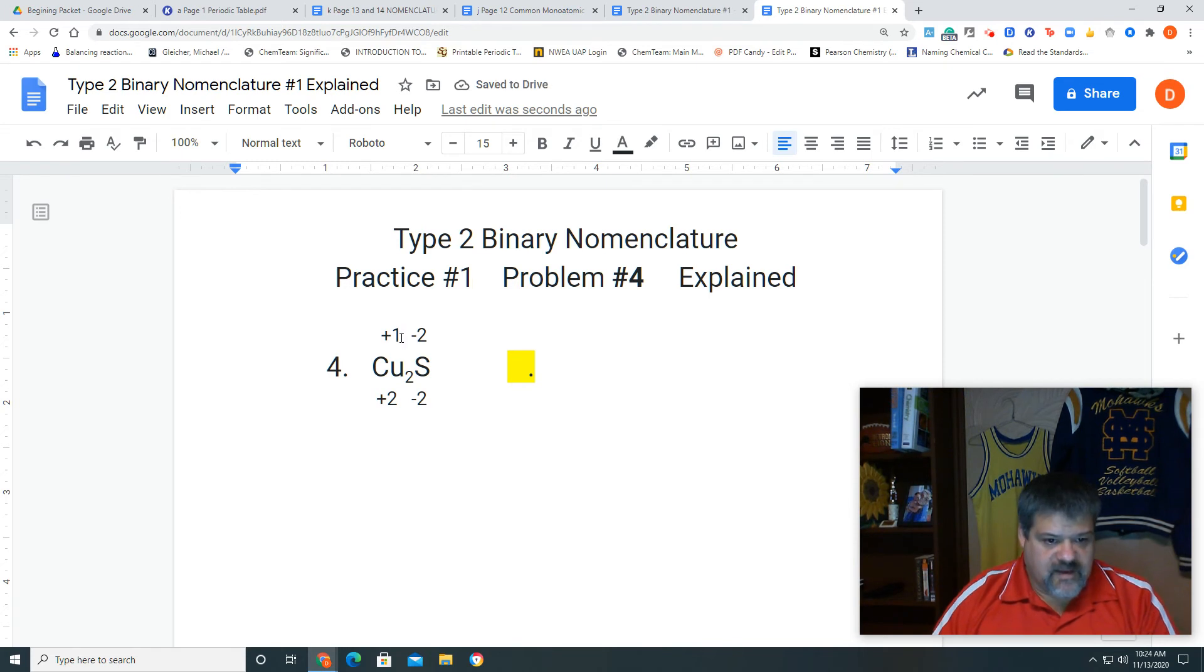So, now what we have to do is take this 1 and put it in Roman numerals after we write down copper. So, we're going to come over here, and we're going to start the name, and we're going to go copper in Roman numerals 1, and then we're going to put down our sulfur.